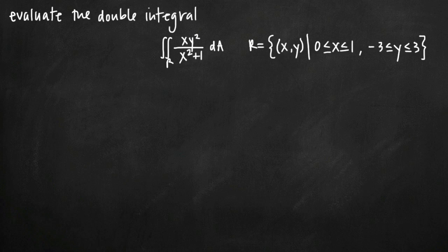Today we're going to be talking about how to evaluate a double integral. In this particular problem we've been given the double integral of the region R, and what we've been asked to do is find the volume above a rectangle defined by an interval for x and an interval for y, but below the function xy² / (x²+1).